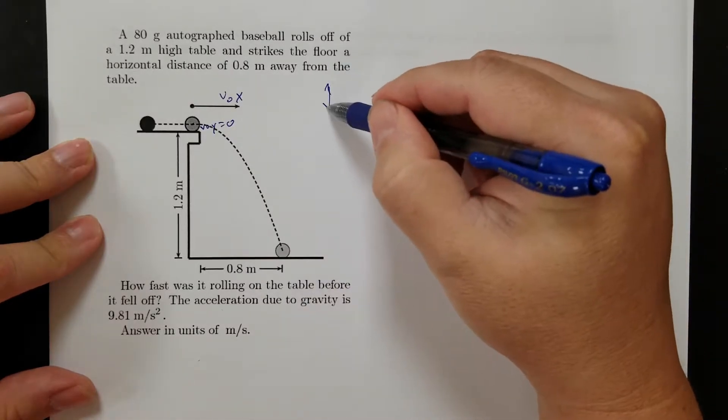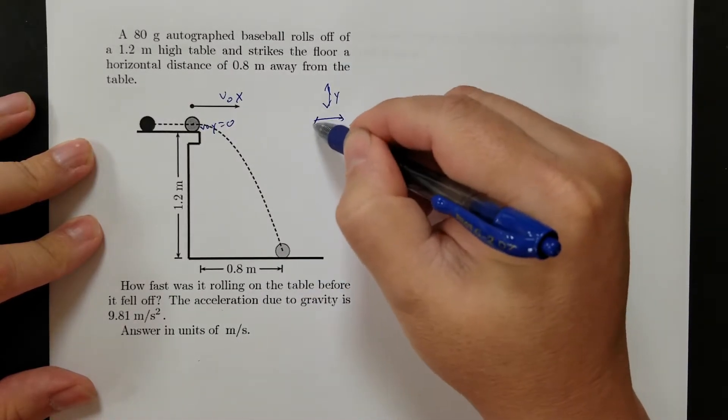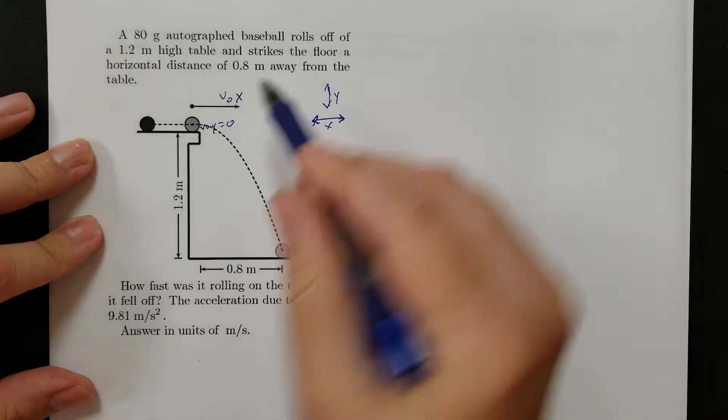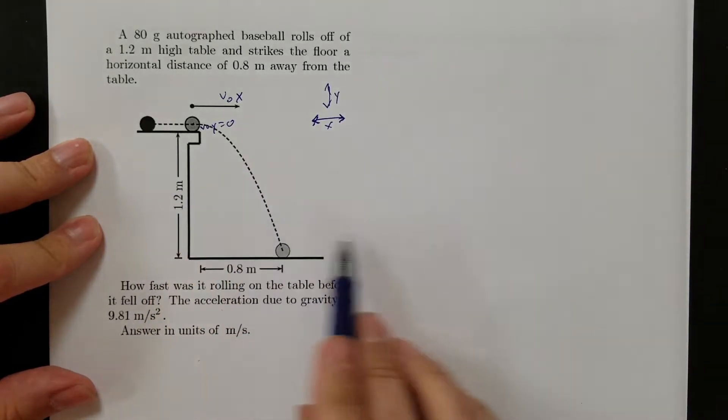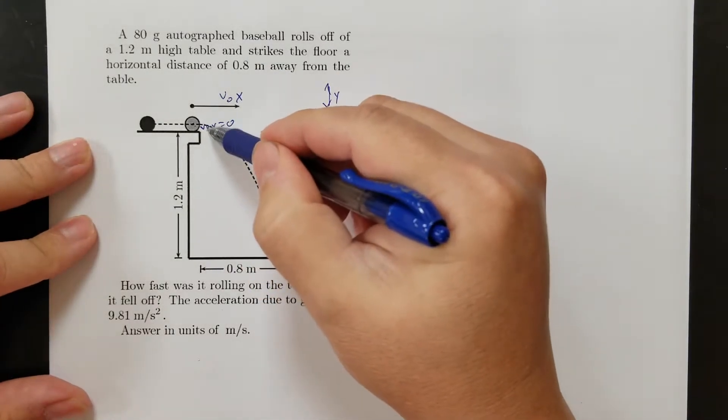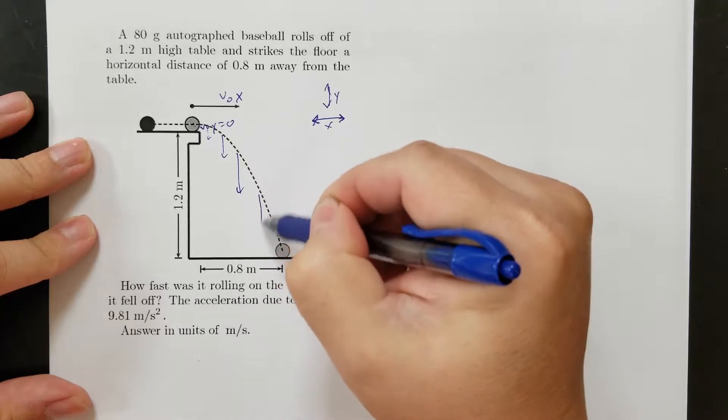So as these things, remember, we're thinking about the motion in the y direction and the motion in the x direction. And so in the x direction, this thing has a constant velocity the whole time. But in the y direction, it's like dropping something. So it starts at zero, and then it gets faster and faster and faster as it falls down.